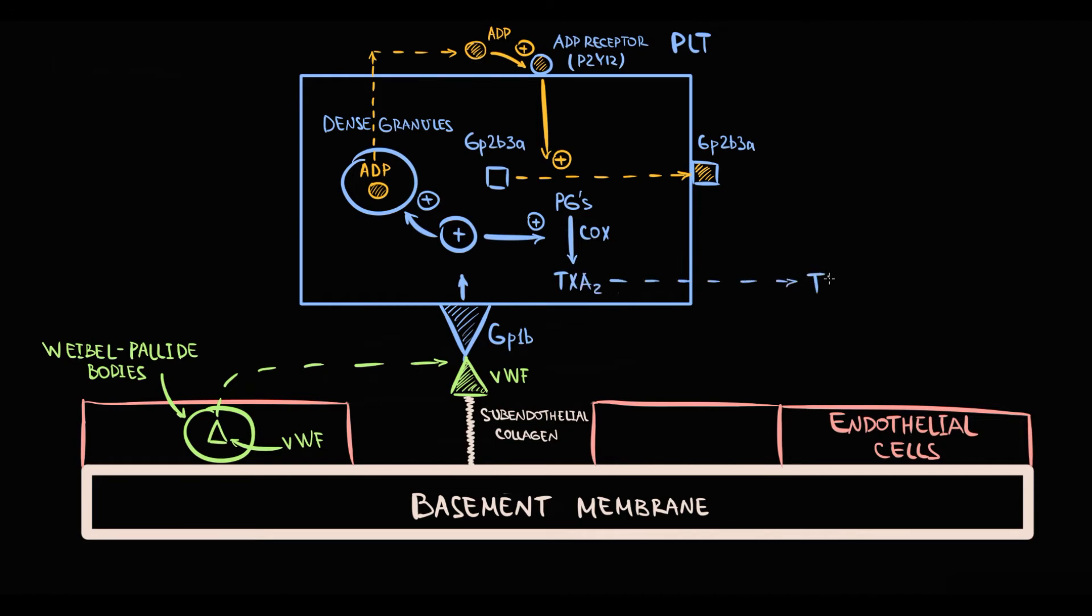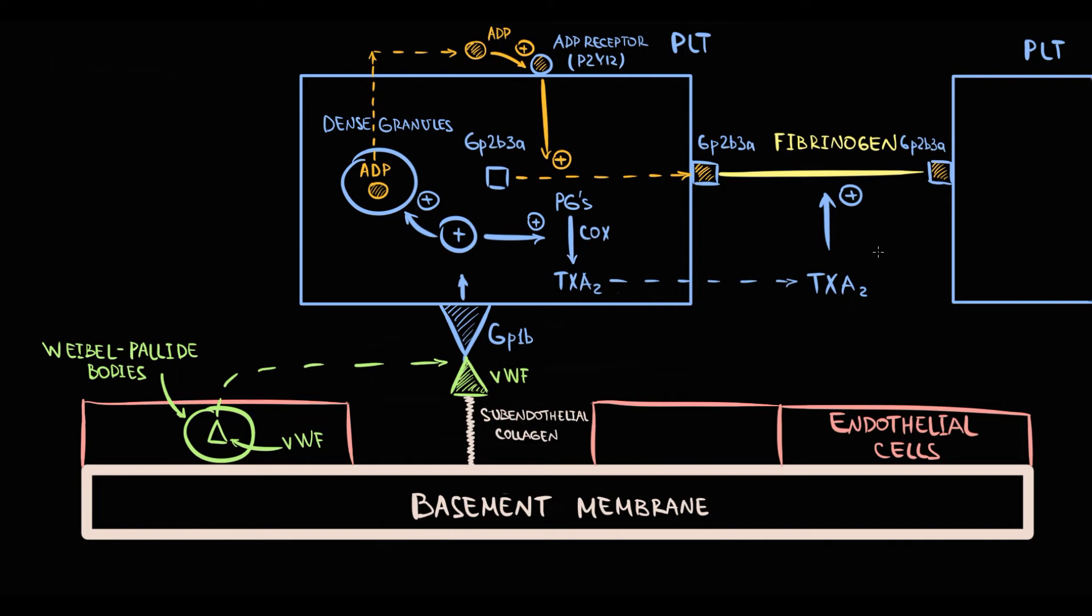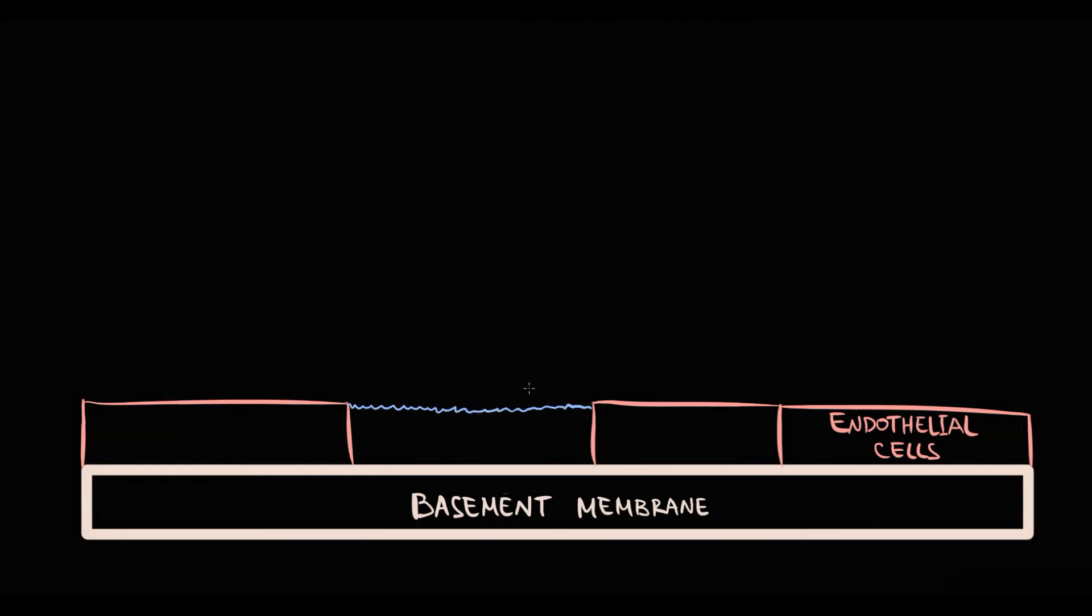And the function of thromboxane A2 is to promote aggregation. When fibrinogen notices a GP2B3A receptor on platelet surface, fibrinogen immediately binds to GP2B3A. And when another platelet comes to the site of injury, platelet immediately binds by GP2B3A to fibrinogen. And this process is significantly accelerated by thromboxane A2. This binding occurs over and over again until platelet plug will be formed. And exactly this gathering of platelets at the site of injury called aggregation.